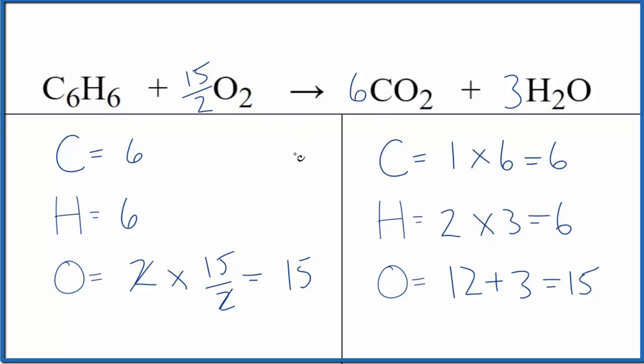What's most important in balancing equations is the ratio. This ratio is correct, but some teachers like to have whole numbers. So we could multiply the whole thing by two. The ratio would stay the same, we just have whole numbers.